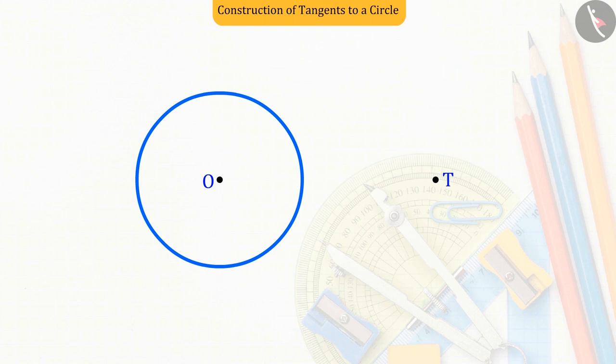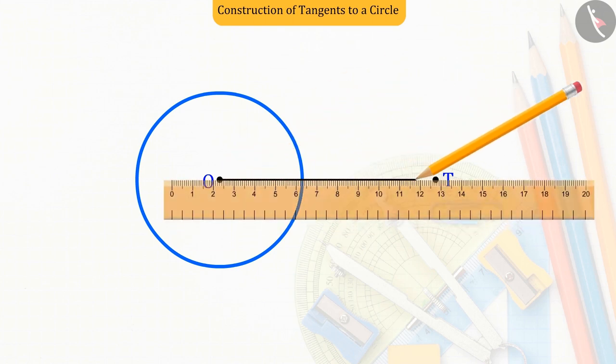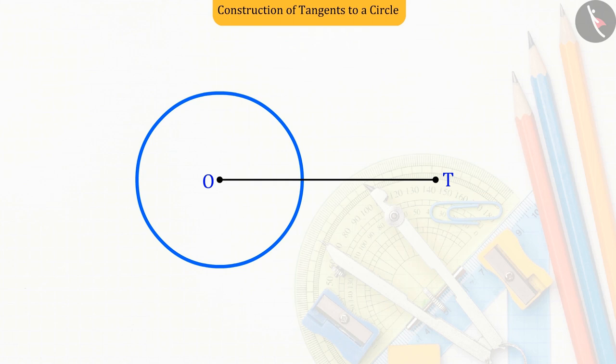To do this, first we join the points O and T. That gives us the line segment OT.